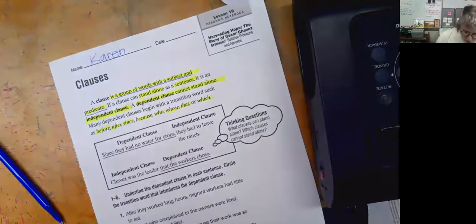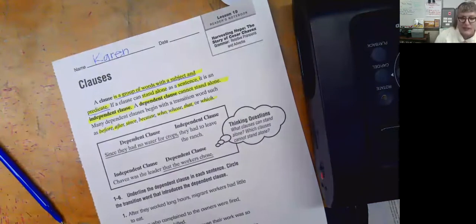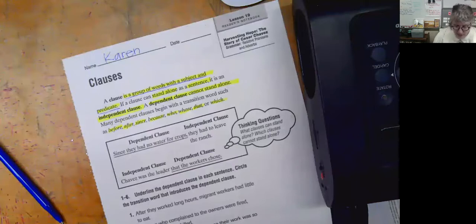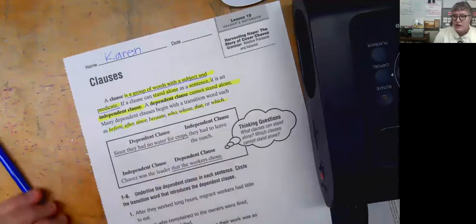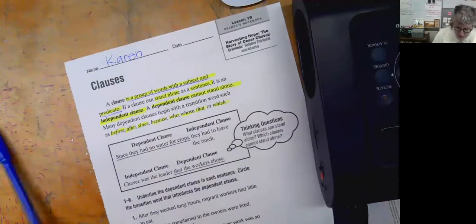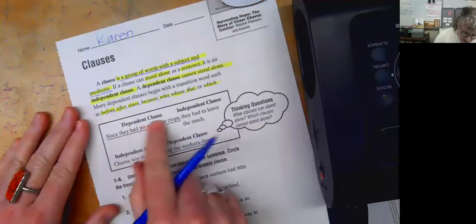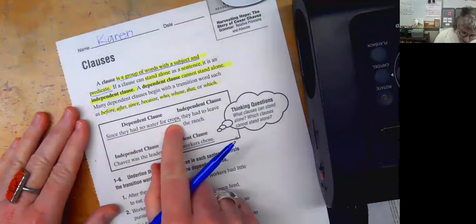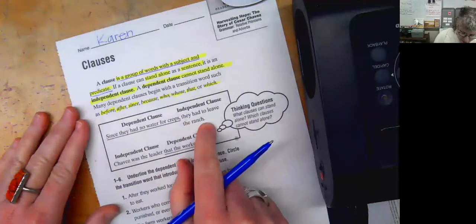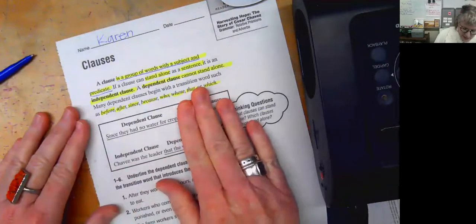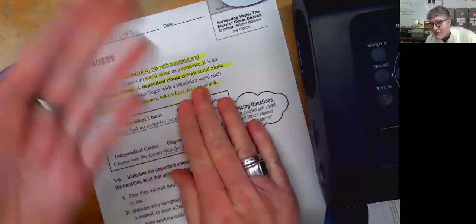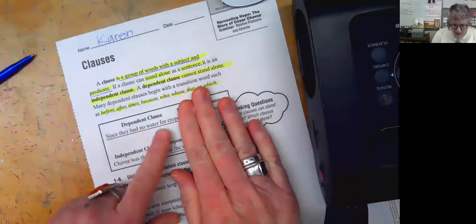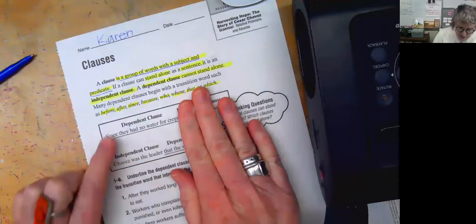Many dependent clauses begin with a transition word such as before, after, since, because, who, whose, that, or which. An independent clause can stand alone and be its own sentence, but a dependent clause can't. For example, 'since they had no water for crops' — the word 'since' makes you think the sentence is going to continue, so it cannot be a complete sentence on its own.